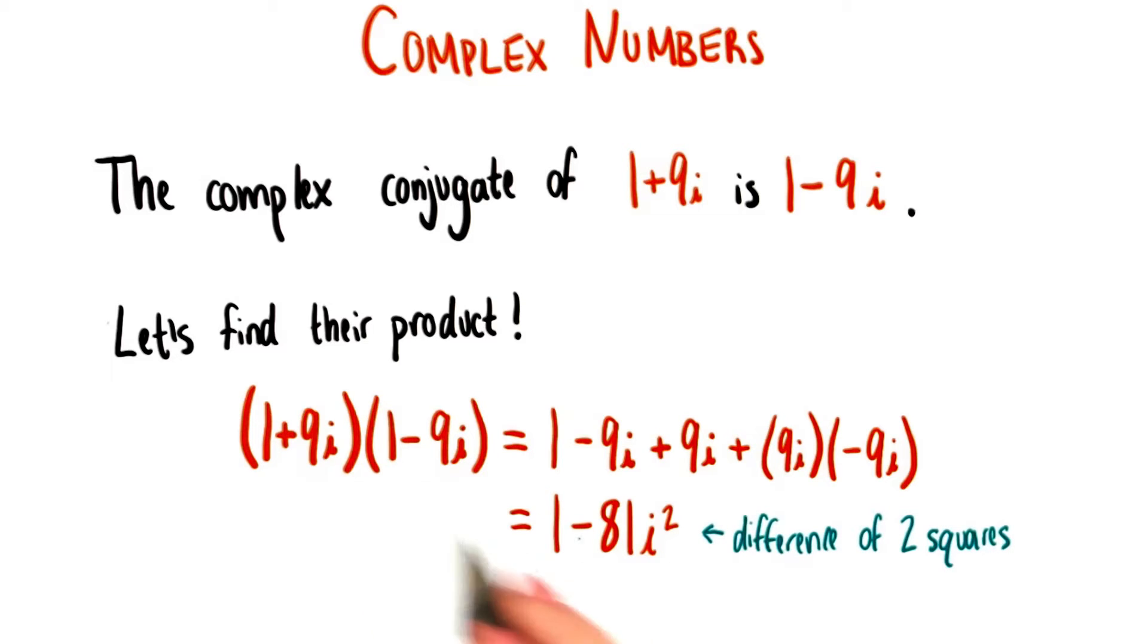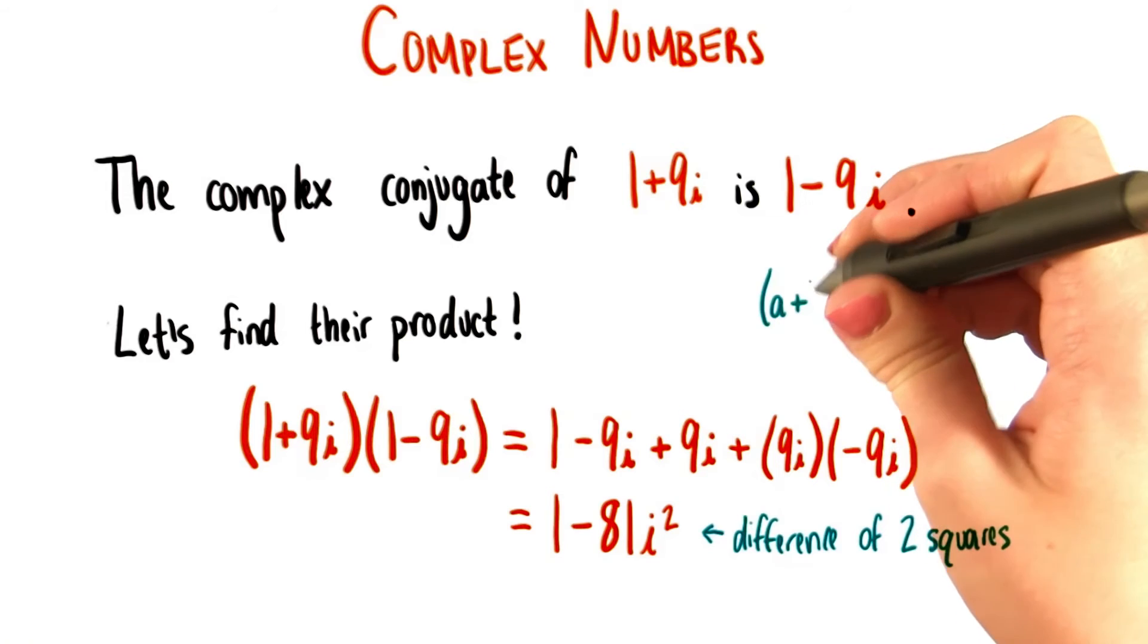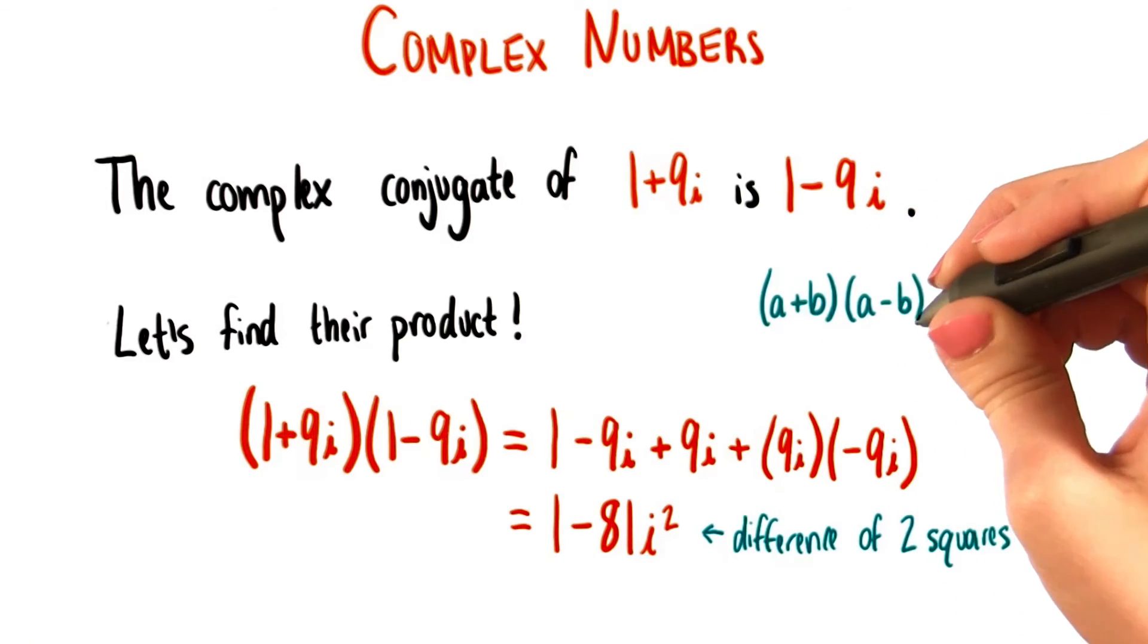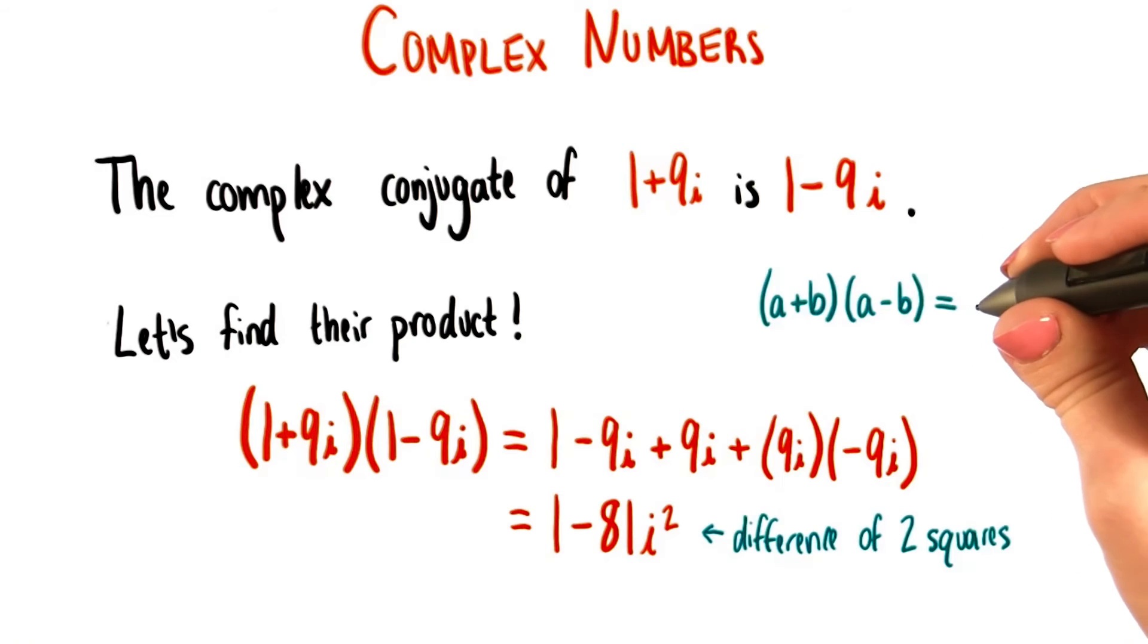This is actually exactly what we would expect to get when we're multiplying things like this together. Remember that we learned quite early on in the course that when we multiply something in the form a plus b times a minus b, we get a squared minus b squared. This is exactly what's happening here.